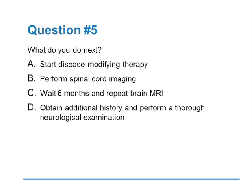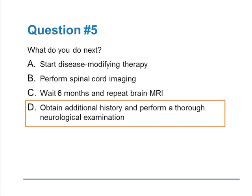Question five: this patient presents with this story and MRI — what do you do next? A, start a disease-modifying therapy; B, perform spinal cord imaging; C, wait six months and repeat a brain MRI; or D, obtain additional history and perform a thorough neurologic exam. A tip from my mentor is that D is always the correct answer. We know very little about this woman beyond her MRI and a little history from the ER — it's concerning, but by no means definitive. You can never go wrong with more information, especially history and examination.